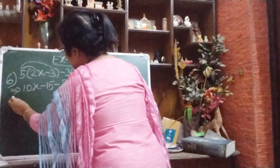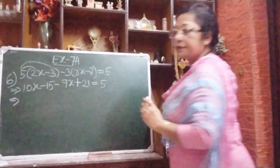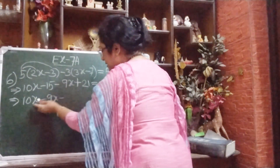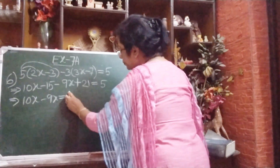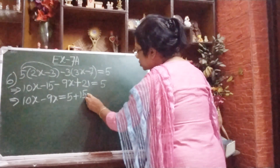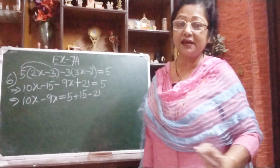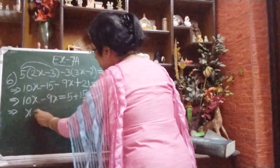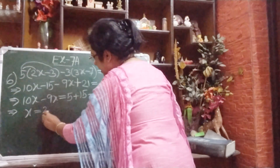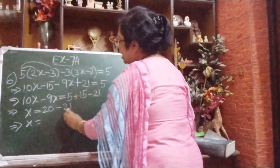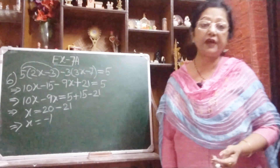Now take the variable terms together: 10x minus 9x = x. Shift constants to the right hand side: 5 minus 15 becomes plus 15, and plus 21 becomes minus 21. So x = 5 plus 15 minus 21 = 20 minus 21 = minus 1. Our value of x is minus 1.